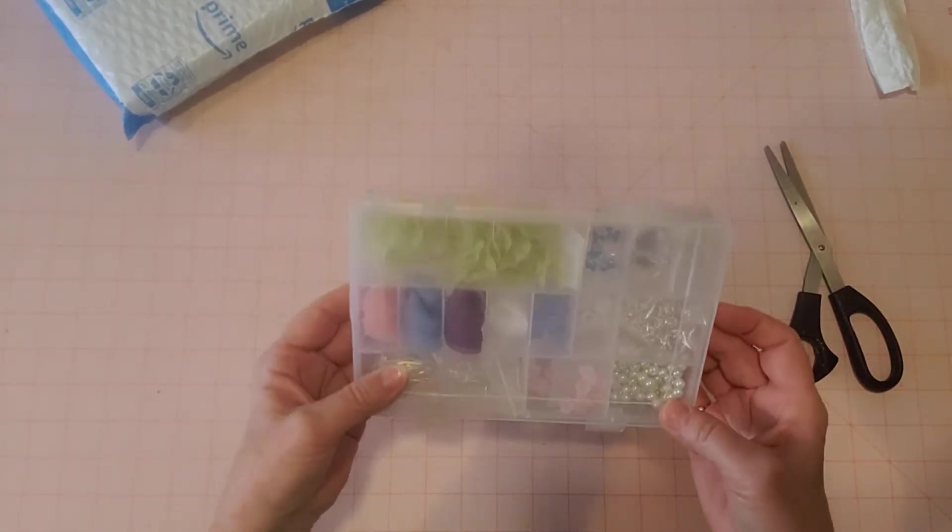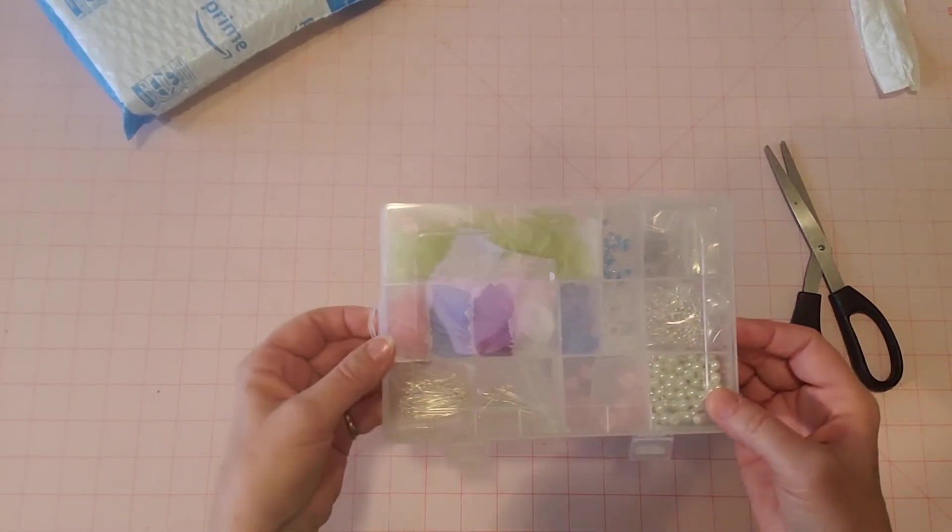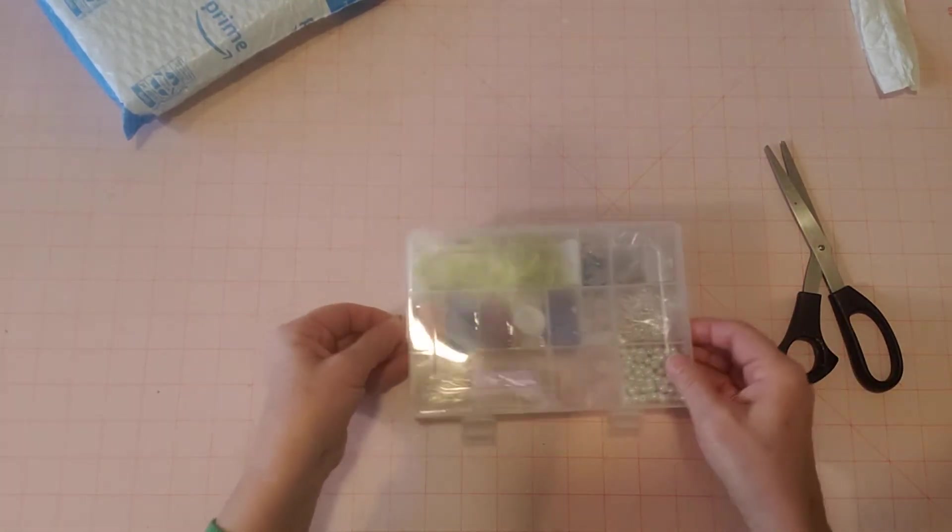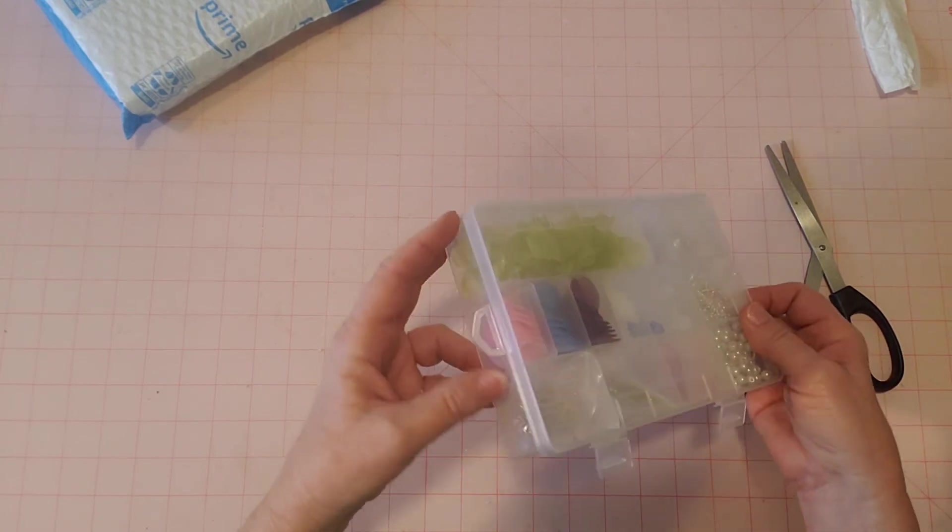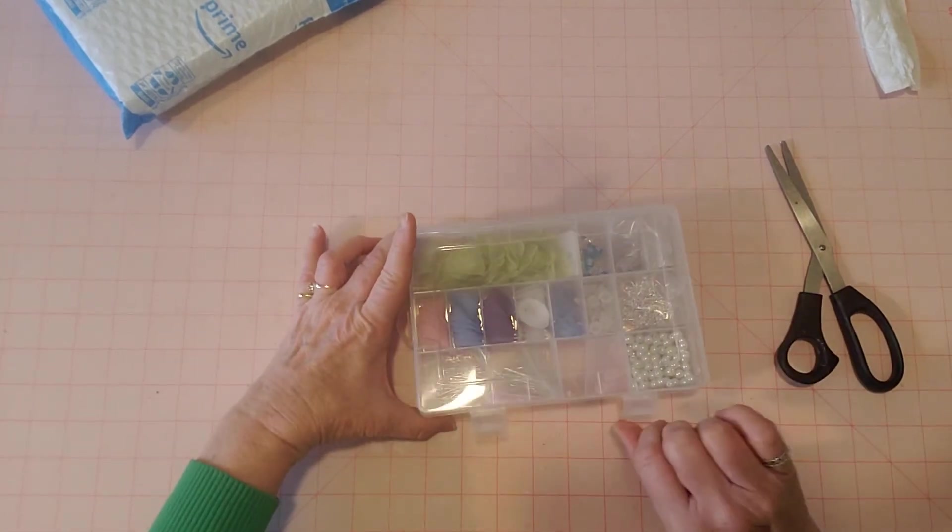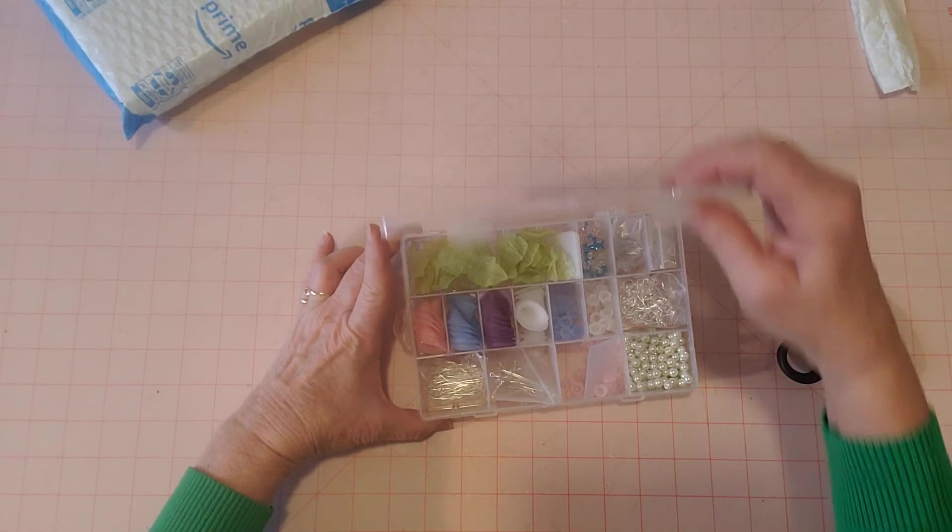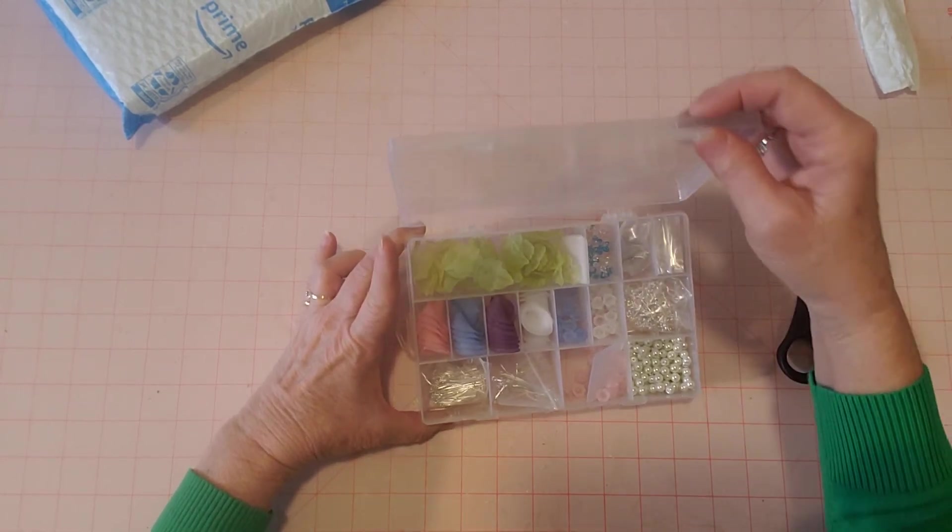So as you can see, it comes in this nice little organizer plastic kit here, plastic storage container. Here's a little handle. So let's see. I just unclicked the little, oh, it just pops up. I was wondering.